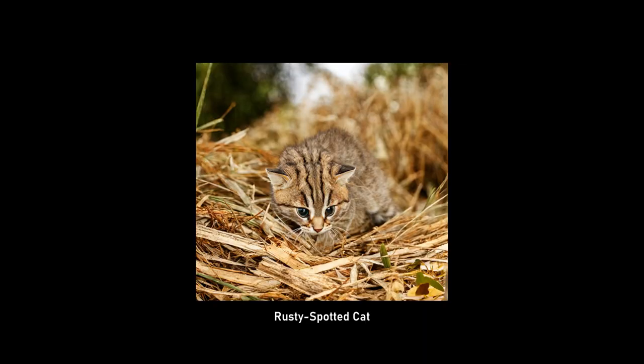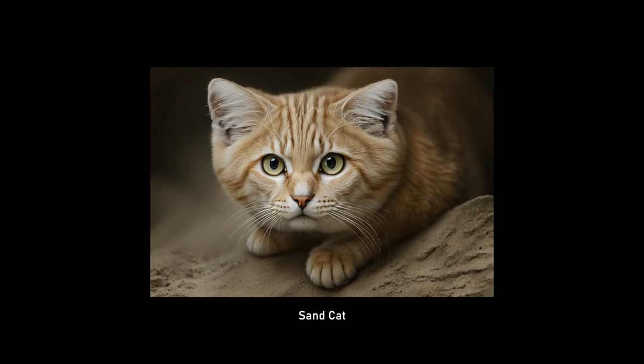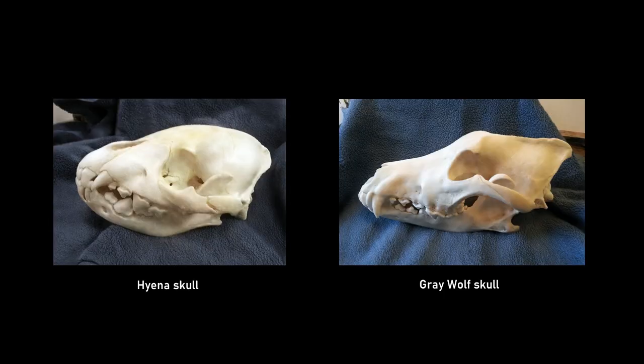There are 41 different species within Felids, and it is possible to trace the various stages of their evolution. For example, by examining cranial anatomy, modern Feliforms can be distinguished from Caniforms, the other carnivorous suborder.